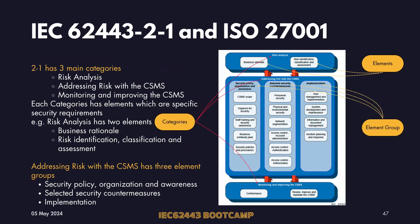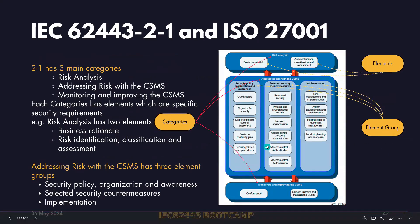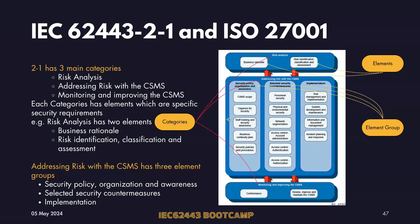There are three categories in the structure. The first is risk analysis, the second is addressing risk with the cyber security management system, and the third is monitoring and improving CSMS. Under risk analysis there are two elements: business rationale and identification of risk. Business rationale is the first step — identifying the core functionality for your business that you want continuously running, so you know which areas need to be focused on to keep your plant running 24/7.